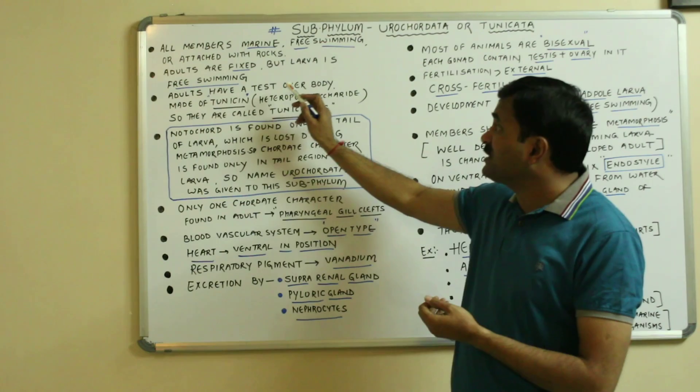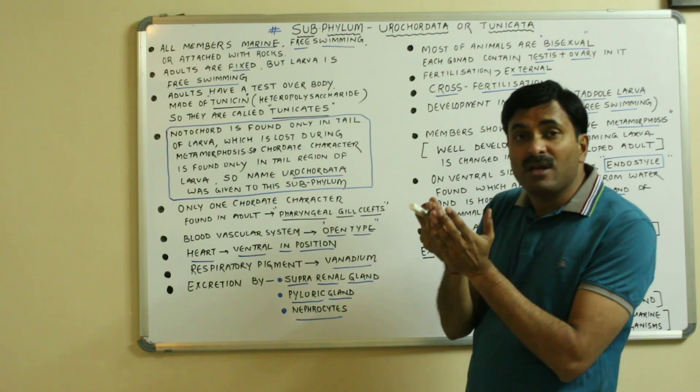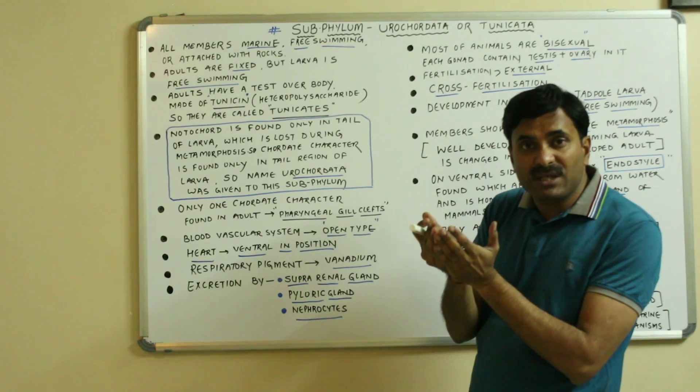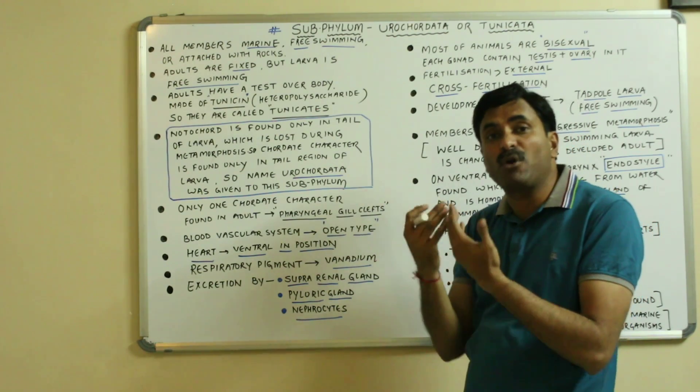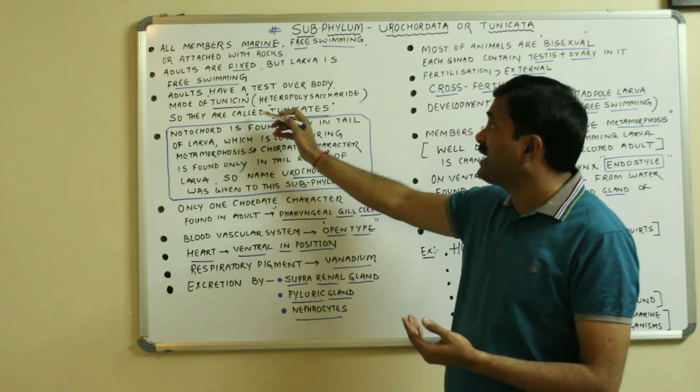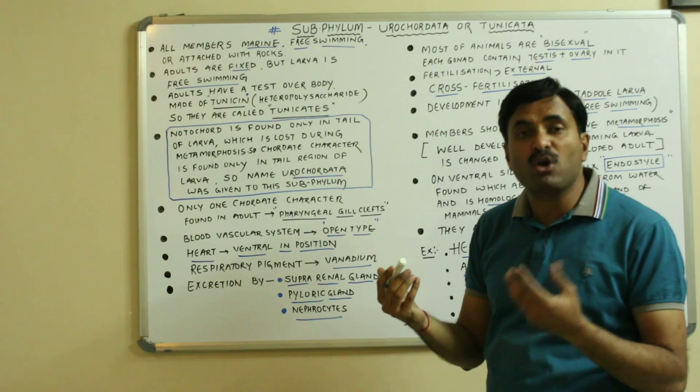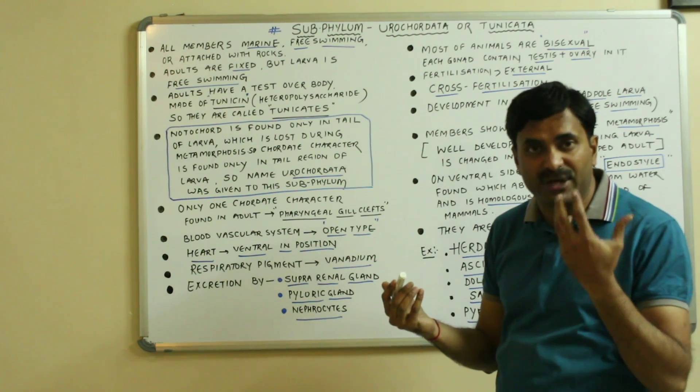Adults have a test over their body. Adults have a test or a covering on their body which is made up of tunicin. Tunicin is basically a carbohydrate, a polysaccharide, hetero polysaccharide in fact. And that's why the Eurochordates are also called Tunicates because of the presence of tunicin covering.